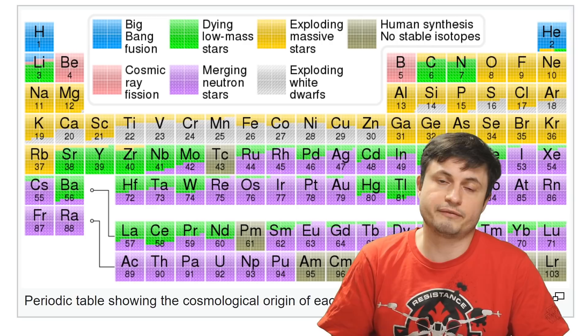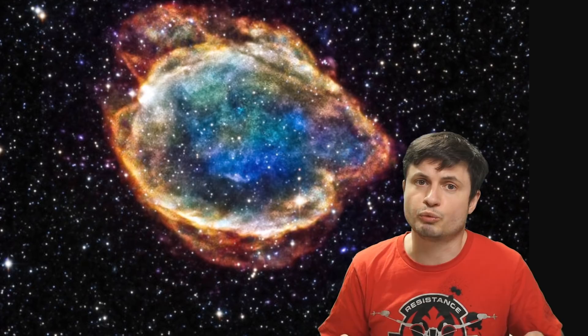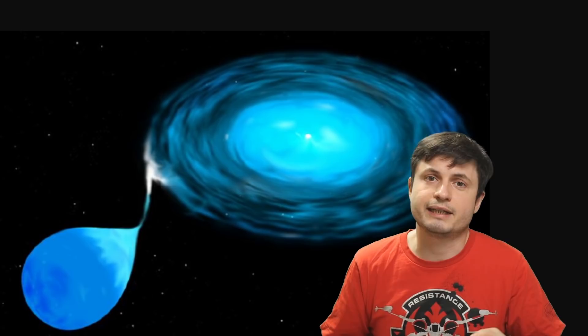So trying to figure out where all of the stuff in for example our bodies came from has actually been always a curiosity for a lot of scientists. But in order to try to understand what happened in the beginning of the solar system and where the material came from, one of the major ways scientists usually do this is by using various meteorites and by then trying to find different ratios of different isotopes inside of those meteorites in order to establish certain age of certain particles.